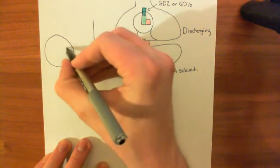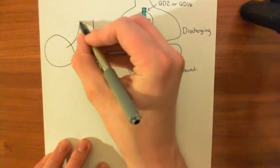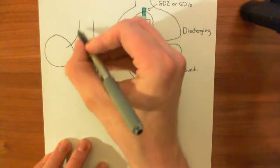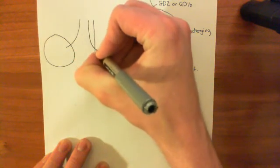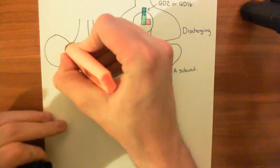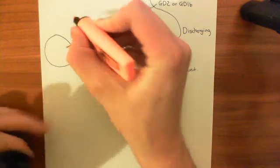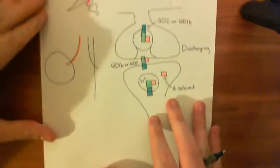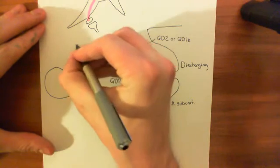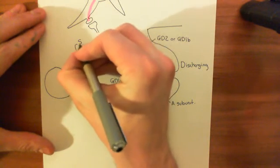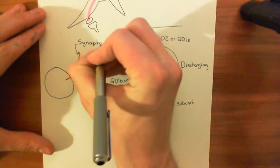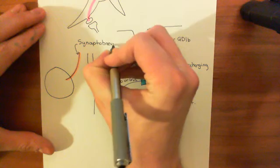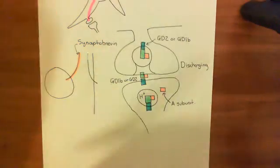Basically, you have this V-SNARE synaptobrevin 2 contributing an alpha helix to this core SNARE complex. You then have the T-SNARE syntaxin 1, and let me color these in. Synaptobrevin is in orange, this is synaptobrevin 2 here. I'll bring it down a bit as well. In fact, synaptobrevin 2 is going to be the target for tetanus neurotoxin.